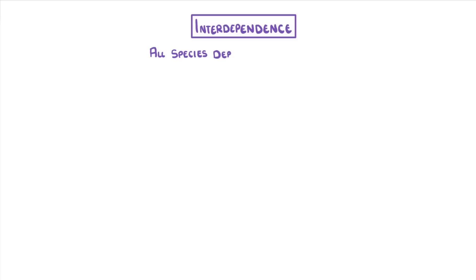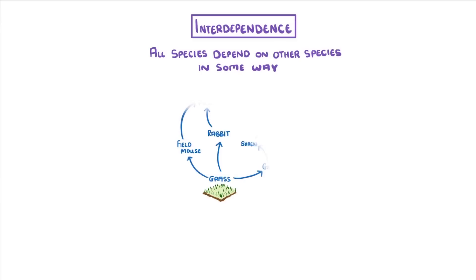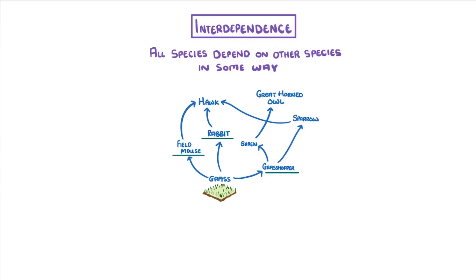The last key term we need to cover is interdependence, which is the idea that all species depend on other species in some way. We can see how this works with a food web, which shows the feeding relationships within a community. So here, we can see that mice, rabbits, and grasshoppers all feed on the grass. And then the shrews and sparrows feed on the grasshoppers, and so on. The important thing to understand, though, is that if anything happens to one of these species, then it will affect all of the others.